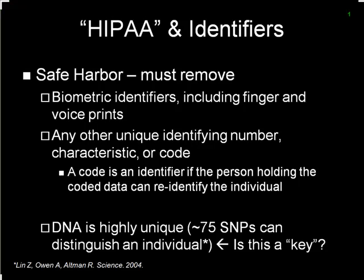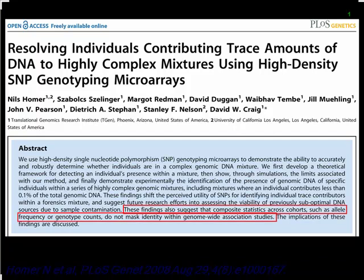Back in 2004, Zhen Lin, Art Owen, and Russ Altman at Stanford published in Science showing that you only need about 75 SNPs to uniquely identify an individual in the entire world population. Genome-wide association studies use about 600,000 SNPs, so people are probably going to be uniquely identifiable. A study recently published by David Craig's group at TGen showed that information being published on dbGaP in aggregated form, assumed to be private, was probably not as private as we thought.